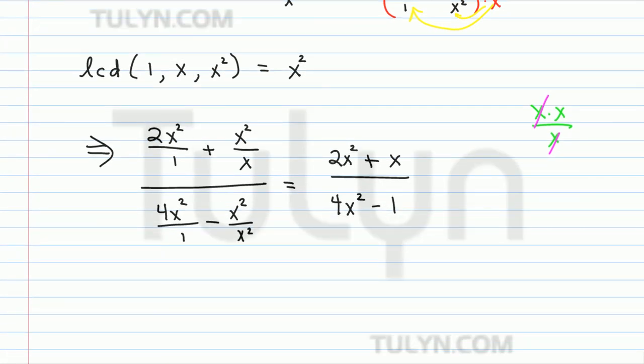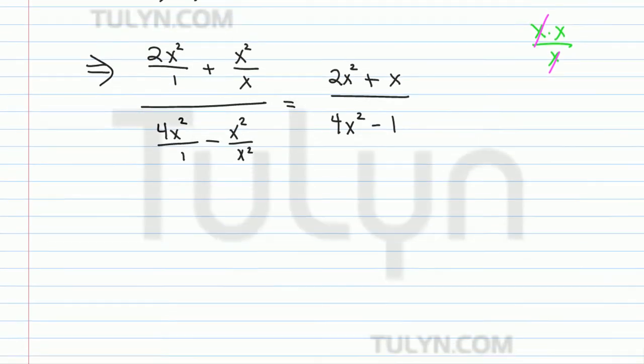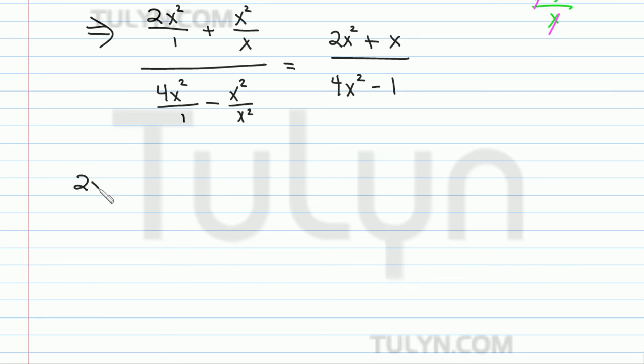So now we have to simplify. And simplifying, this is just the basic rational expression where the first thing we do is try to factor things out. So let me rewrite this down here. We get 2x squared plus x over 4x squared minus 1. Now this can be written as 2 times x times x plus x.